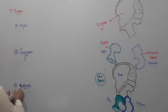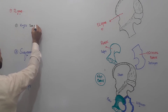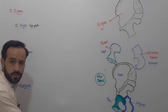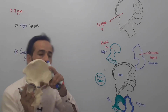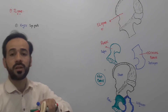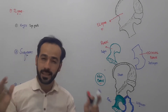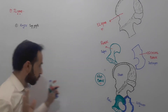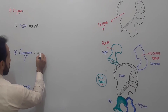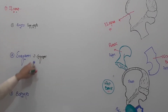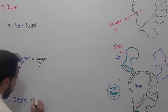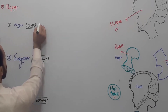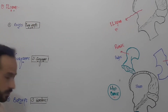The ilium has two ends: an upper end and a lower end. I will first write the theory on the whiteboard, then we will see it practically on the surface of the bone. To summarize: the ilium has two ends, three surfaces, and three borders.